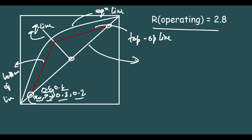Since the x and y values are equal for these composition points, they always fall on the diagonal line. Hence all the values XW, XF, and XD lie on the diagonal line, making it easier to locate them. That was the only purpose of drawing the diagonal line.